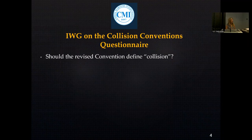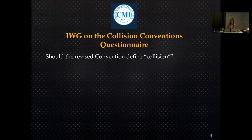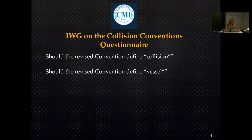The first question is: should the revised convention define collision? We think it should, and that definition should include indirect collision as well, where damage is caused to another vessel by waves generated by improper navigation of a vessel. It should also include cases of collision where both vessels are owned by the same beneficial owner. Furthermore, the 1910 Collision Convention applies to collision of vessels but does not feature a definition of a vessel.